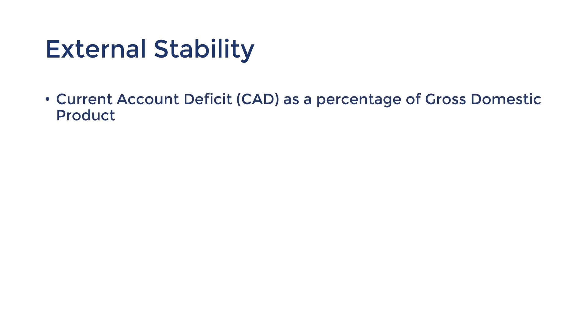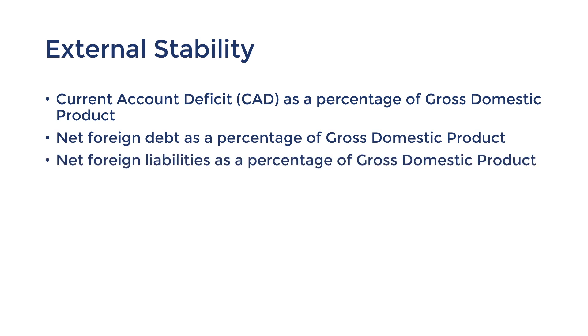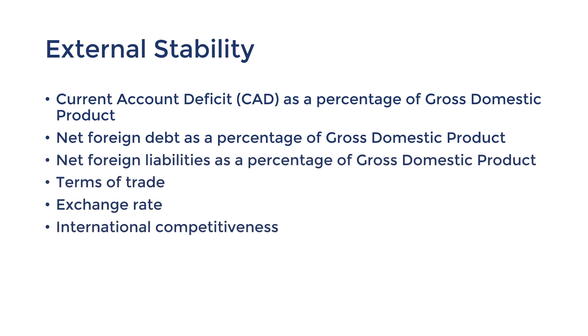In that last video, I gave an overview of external stability. External stability refers to the economic objective concerned with ensuring that our foreign obligations are sustainable and that they're not too volatile or risky. The topic comes up in topic three of the syllabus, where indicators of external stability include the CAD, net foreign debt, net foreign liabilities, terms of trade, the exchange rate, and international competitiveness. For each of these topics, I'm going to give an overview of their trends as well as their causes and effects.